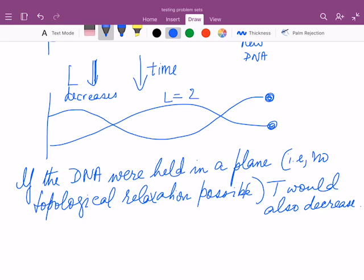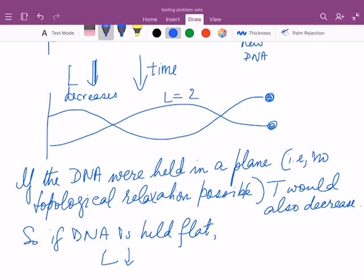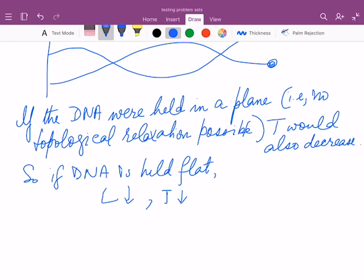Remember that the linking number, L, is the overall rotation of one strand with respect to the other. And the twist is the local rotation from base pair to base pair of the strands about each other. And here, so if DNA is held flat, L would go down, T would also go down, which is underwinding the DNA.